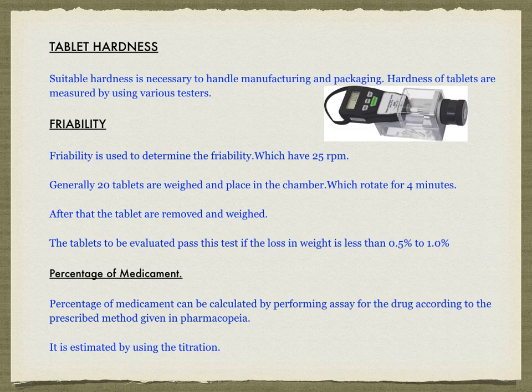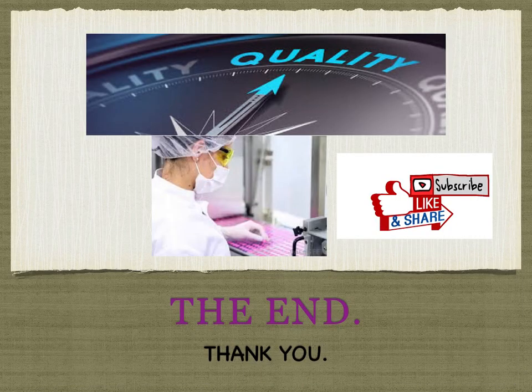Percentage of medicament can be calculated by performing an assay for the drug according to the prescribed method given in the pharmacopoeia. It is estimated by using titration.